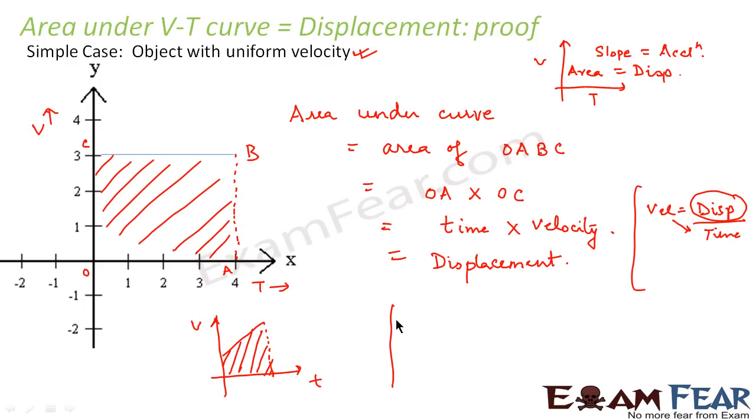Similarly if the velocity time graph is something like anything, I mean absolutely anything. Suppose if it is like this then the area under this curve would again become the displacement. So this area will become the displacement.